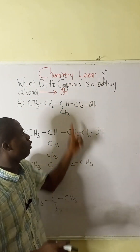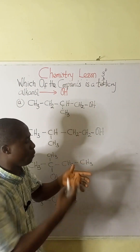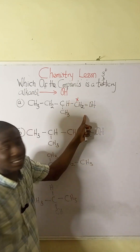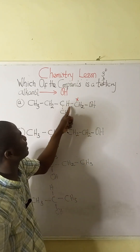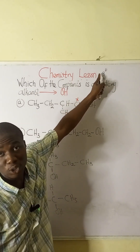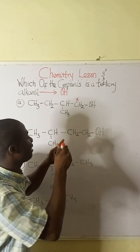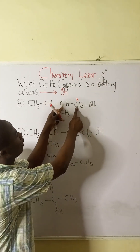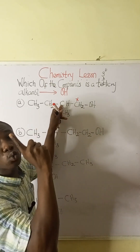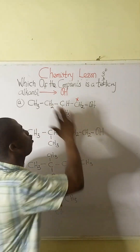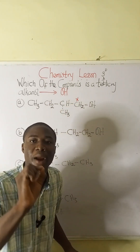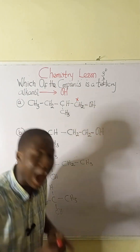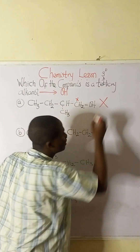Let's analyze the options. In option A, this is the carbon atom that bears the OH functional group. Is it directly attached to three carbons? No — it is directly attached to just one carbon. So this compound is a primary alkanol, and it cannot be our answer.